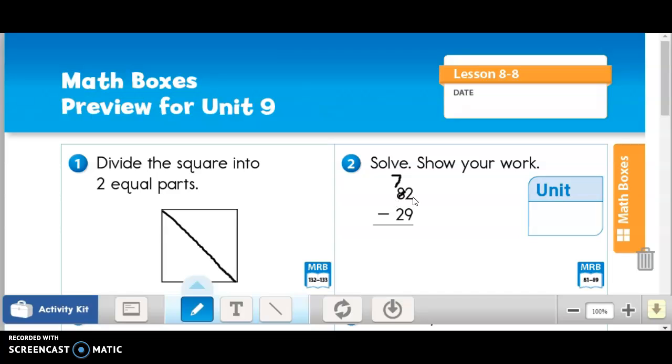And that ten plus two ones that I have there, that makes it a twelve. Now, I do have more on top. Twelve minus nine, that's three. And seven minus two is five.